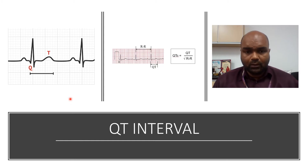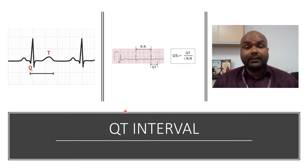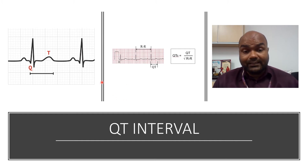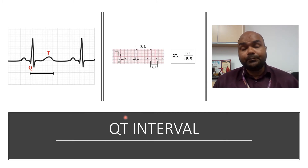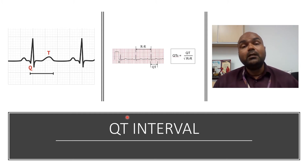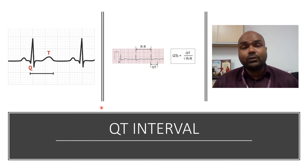The QT interval measures ventricular depolarization followed by ventricular repolarization. Any problem with the QT indicates a potential problem in the ventricle. The QT should not be more than 11 small boxes; a normal QT is around 11 small boxes, which is 0.44 seconds.